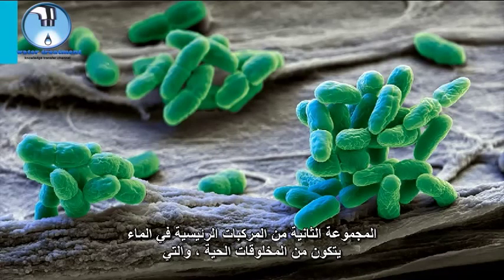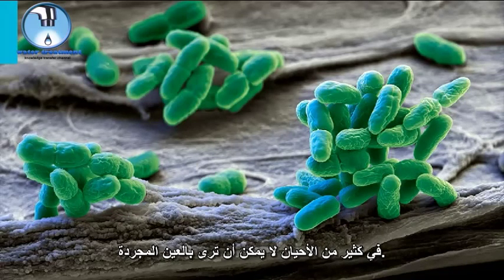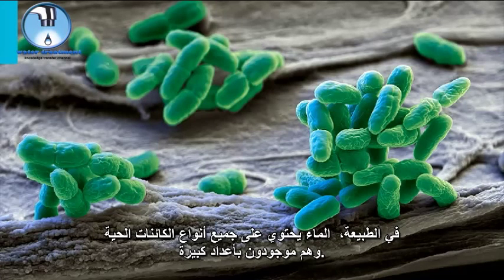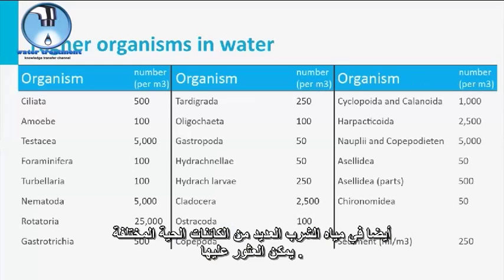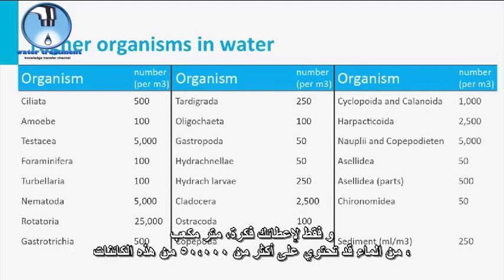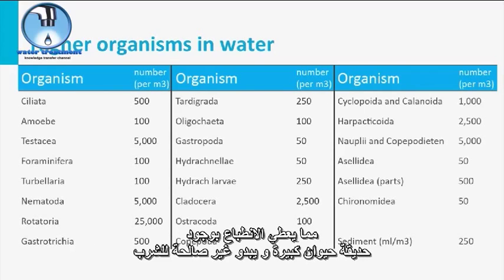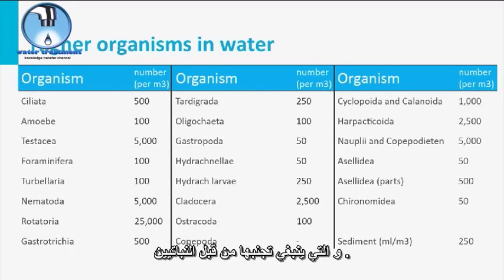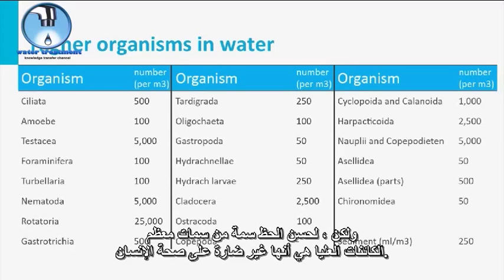The second group of key compounds in water consists of living creatures, which you most often cannot see with the naked eye. In nature, water contains all kinds of organisms and they are present in large numbers. Higher organisms, depicted in the slide, have a size between 0.05 and 10 mm. A cubic meter of water may contain over 50,000 of these organisms, which gives the impression of a large zoo. However, a characteristic of most higher organisms is that they are harmless to human health, and their presence in drinking water is only aggravating if they are detectable by the naked eye.